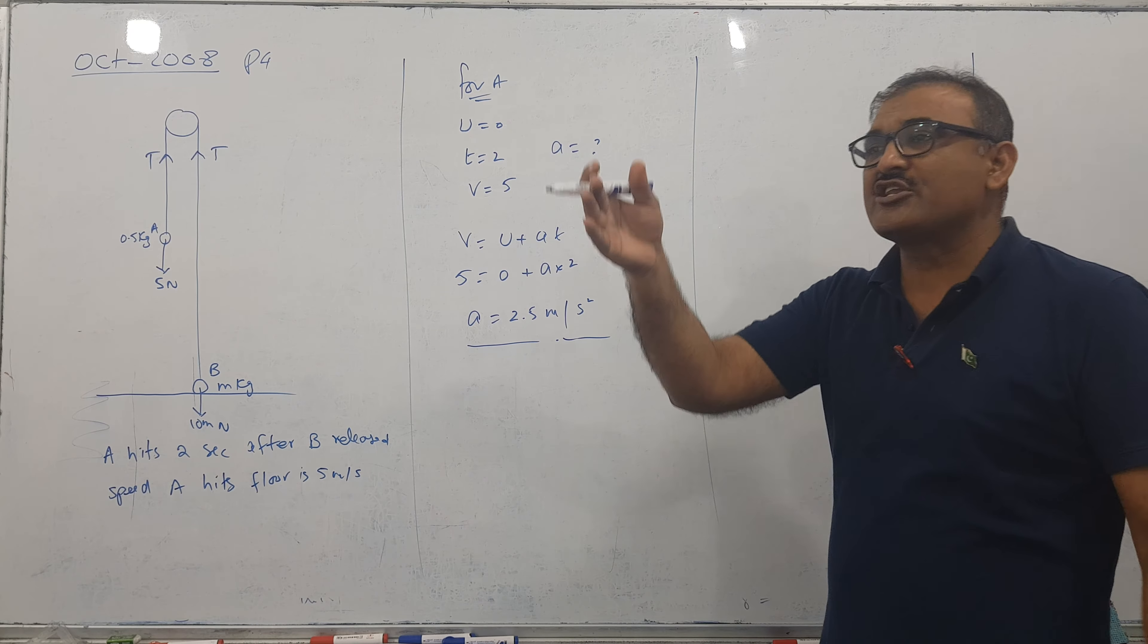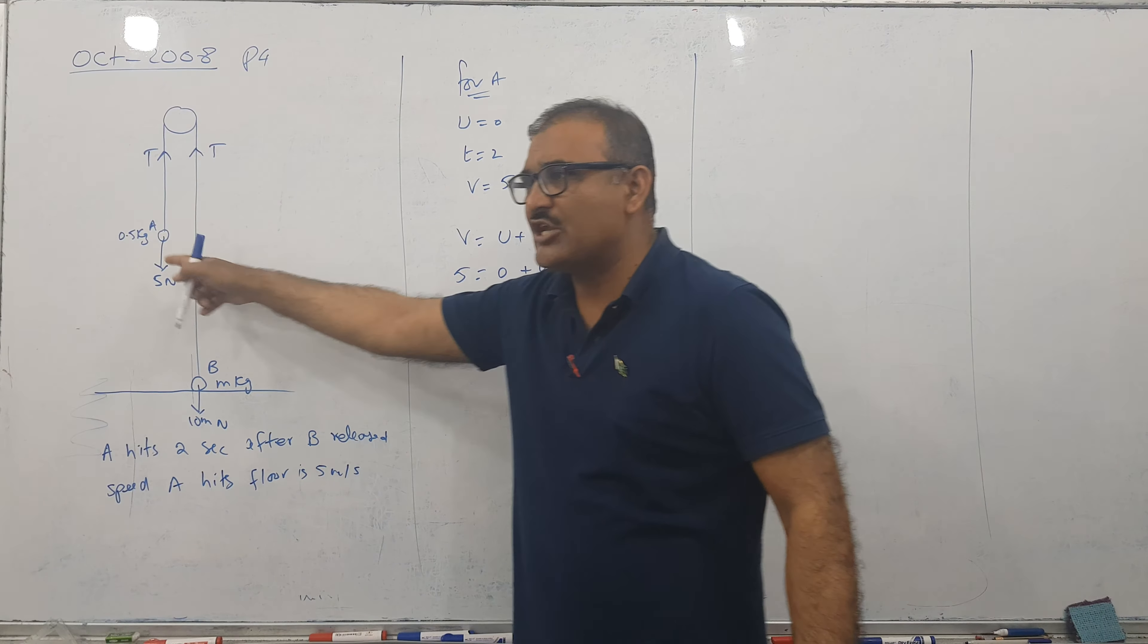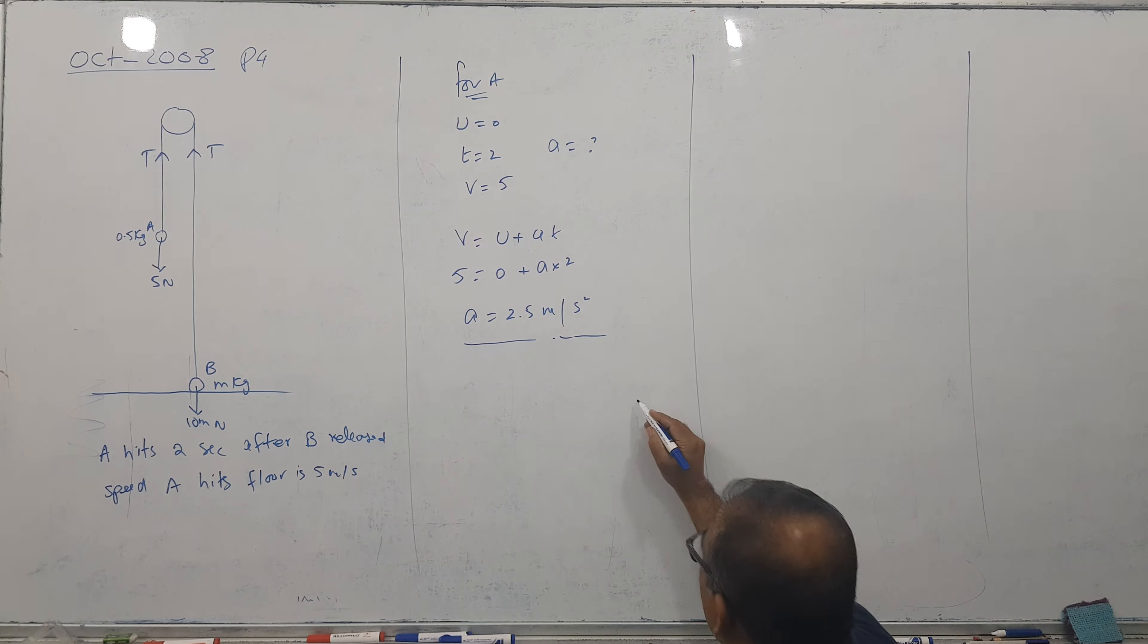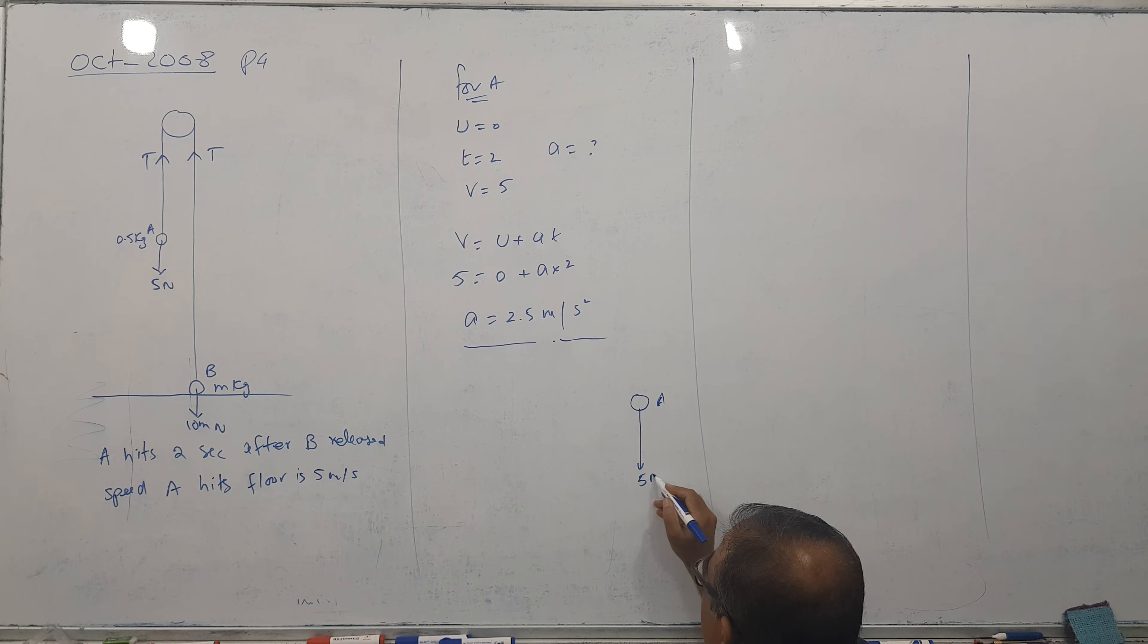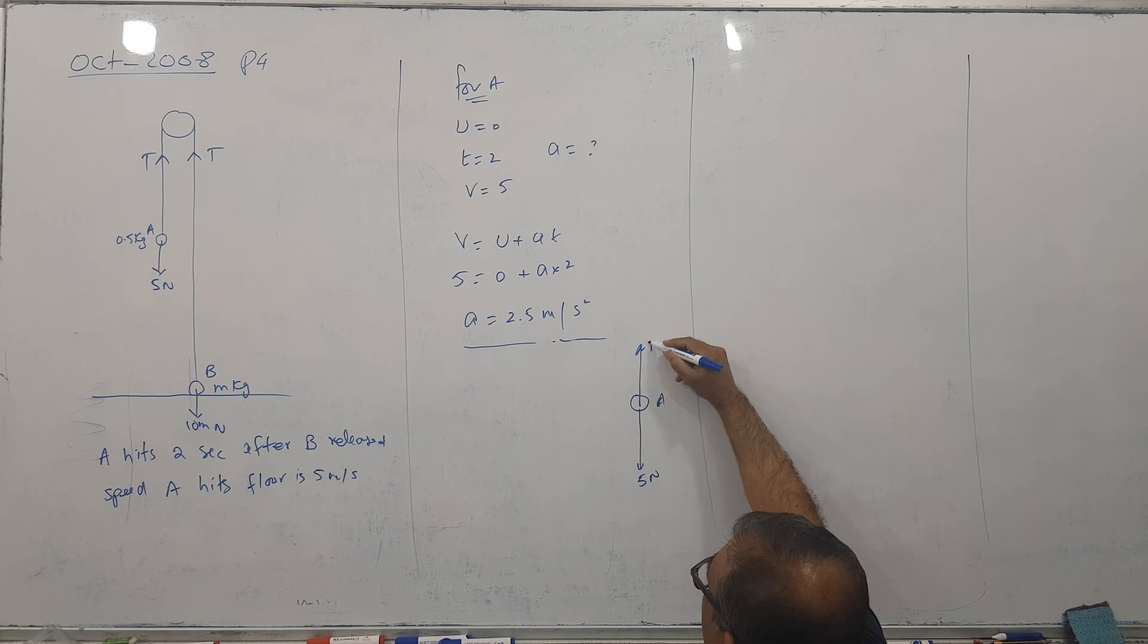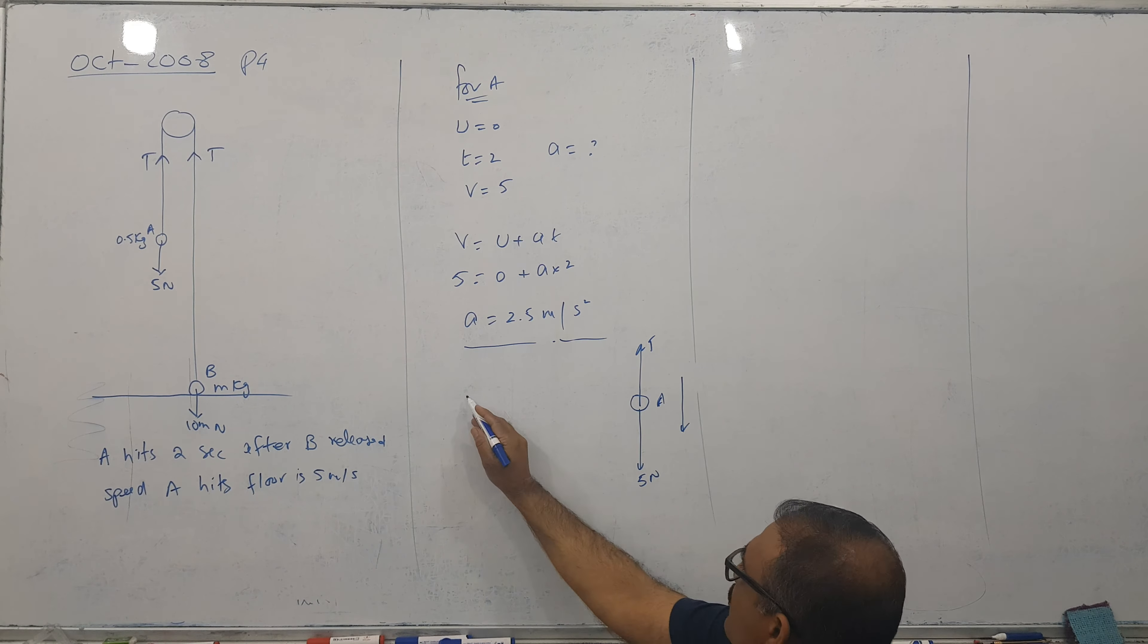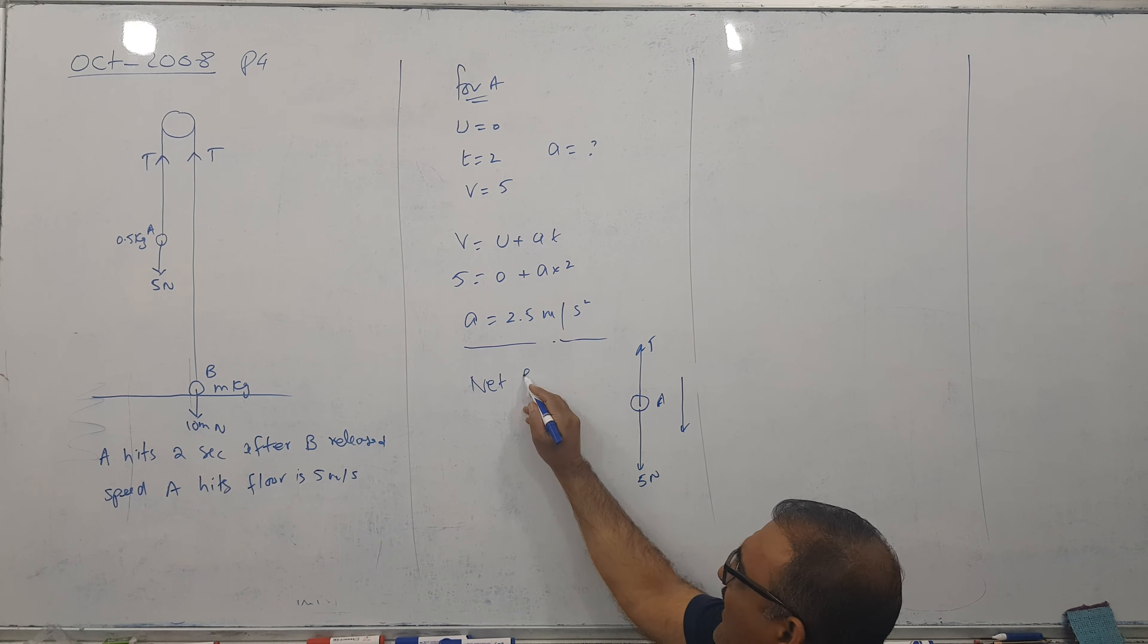So he is asking tension now. Just assume this plan. When system is falling downwards, this is particle A, this is 5 Newtons, backward is tension. Motion is downward, so I am saying net force equal to MA.